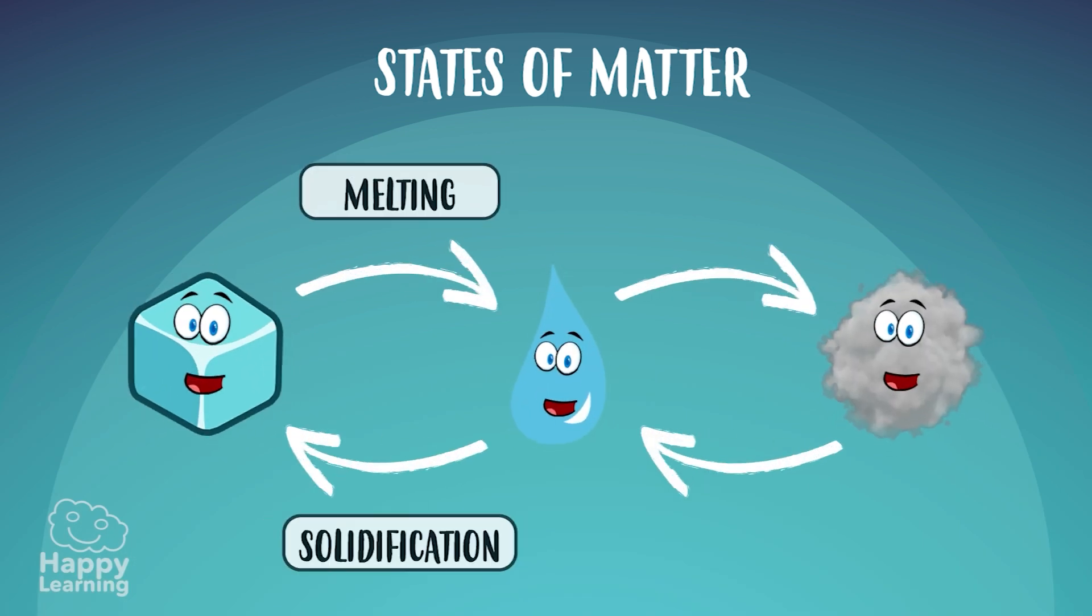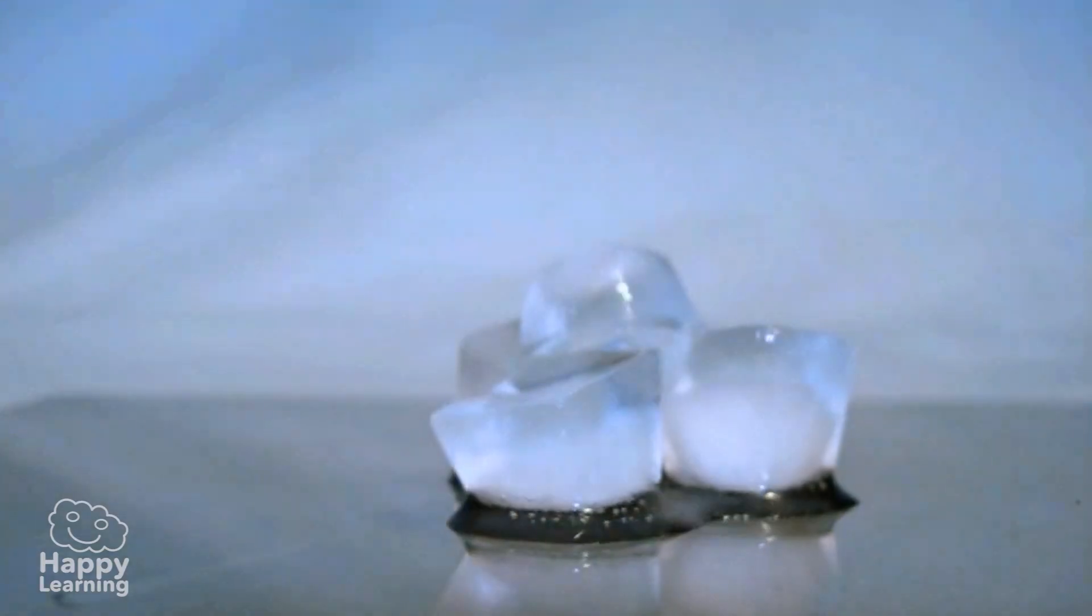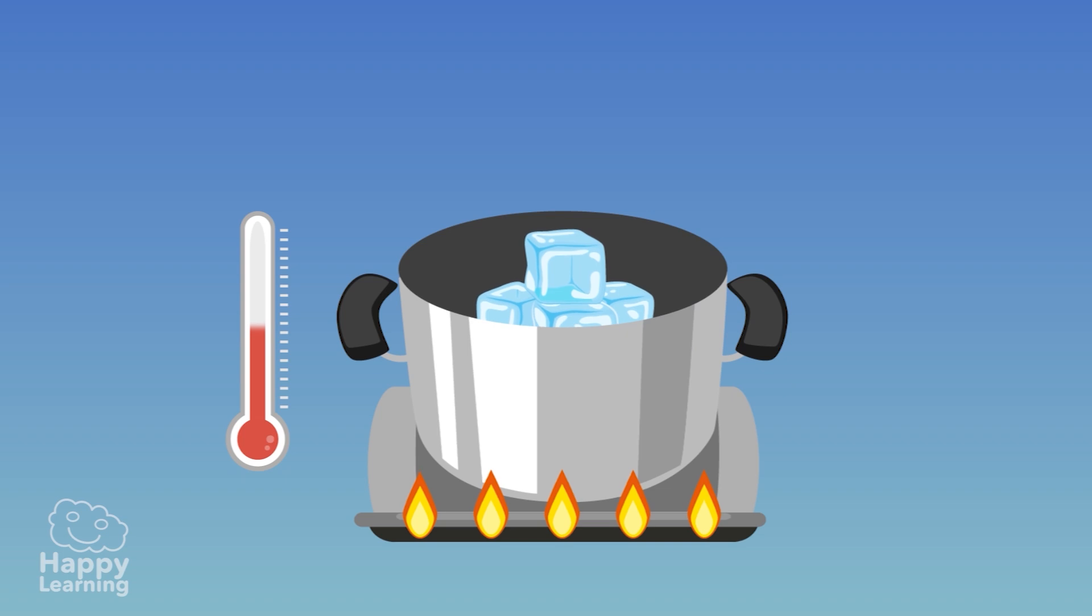Melting, solidification, evaporation, and condensation. Melting happens when matter changes from its solid to liquid form, and happens after rising temperature. When we heat an ice cube or leave it at room temperature,